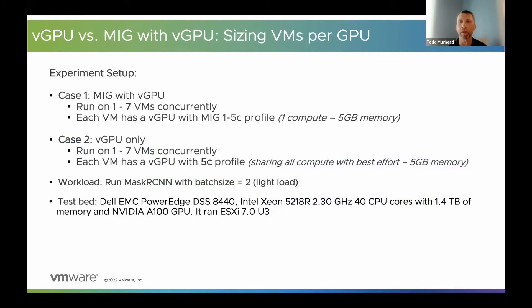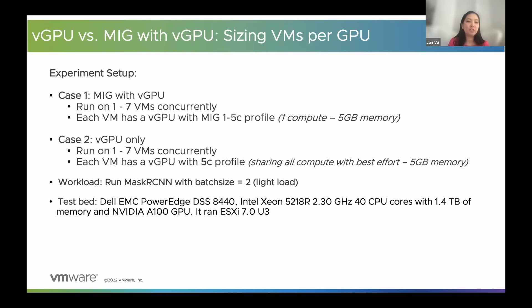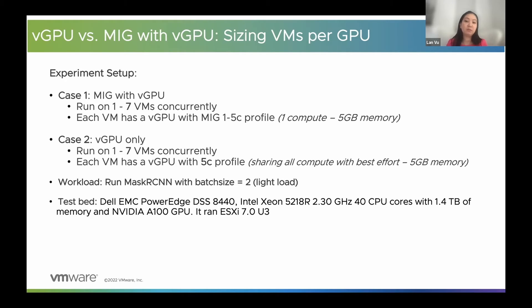Okay, cool. So that's a very important distinction. Thanks for explaining that. So for this experiment, we're looking at how MIG and vGPU differ when sizing the number of virtual machines running ML AI workload per GPU. In this case, we have MIG with vGPU, scaling from 1 to 7 VMs concurrently, using MIG 1G.5C profile. For vGPU, we use a similar configuration with the 5C profile, which is also 5 GB memory. We run our experiments on Dell hardware with an A100 GPU using ESXi 7.0 U3.